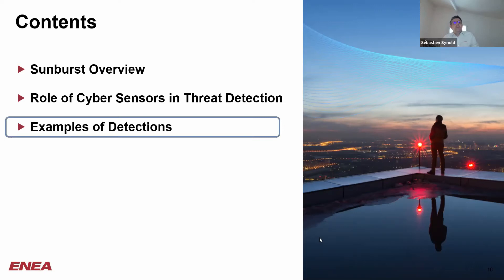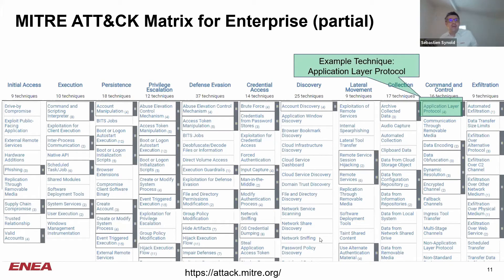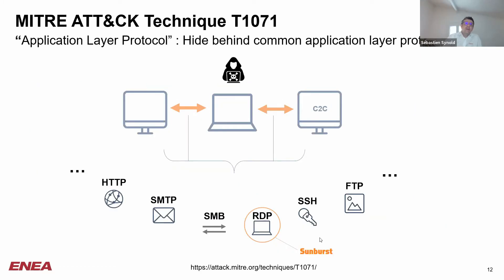Now let's dig into a few concrete examples where a Cyber sensor can help an IDS detect threats. We saw that the Sunburst malware contacted a command and control server using remote desktop protocol, RDP — a technique listed by MITRE as application layer protocol. According to MITRE, this technique uses standard protocols such as HTTP, FTP, SMTP, or other email protocols, which are commonly used in IT networks for basic services like emailing or web communications. So those protocols are allowed by firewalls to ensure basic network function, and can also be used by malware to retrieve instructions from their command and control server.